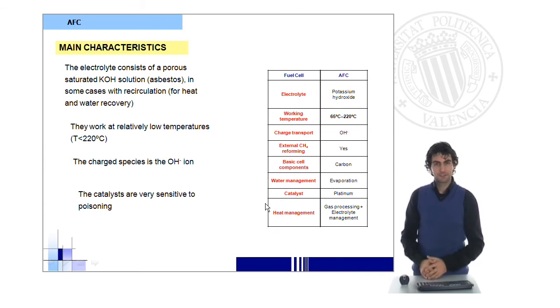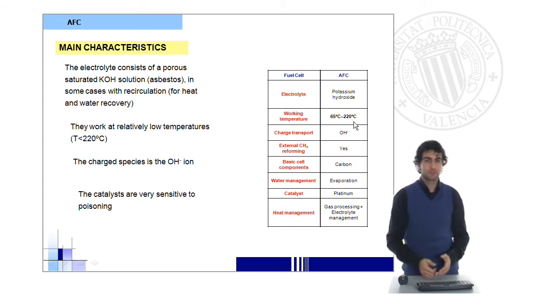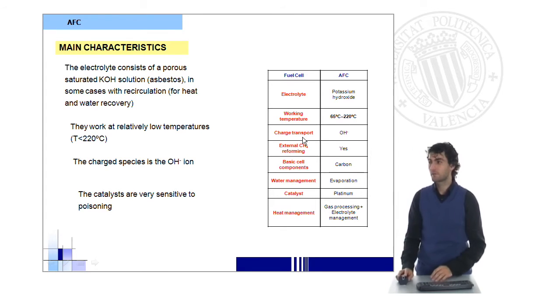These are the main characteristics of AFC. As mentioned before, the electrolyte consists of a potassium hydroxide solution which will be in movement. The working temperature of these fuel cells is quite low, ranging from 65 to 200 degrees, which is still quite low compared to other fuel cells. The charge transfer will be carried out by the hydroxyl anion.